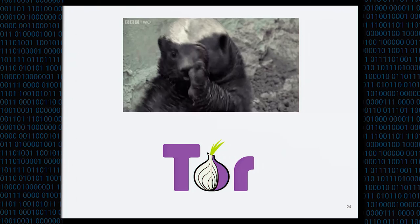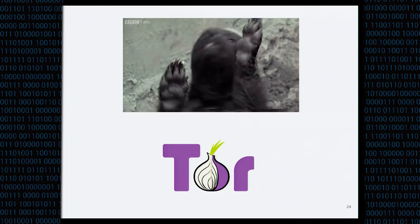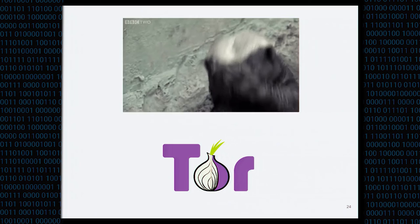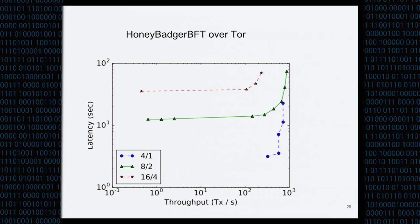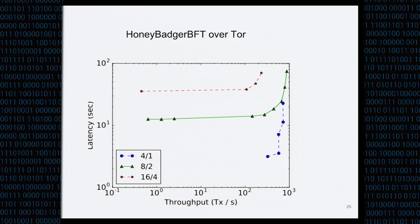We also ran what I believe is the first BFT protocol experiment over Tor. We were able to do this precisely because Tor introduces highly variable latency — the exact challenge asynchronous protocols are designed to handle. We used the exact same protocol configuration as our EC2 experiments with no parameters to tune. We set up nodes making hidden service connections through the Tor network, resulting in N-squared hidden service circuits. With a smaller number of nodes, latency and achievable throughput are much worse over Tor, but we still achieved over 1,000 transactions per second — an unprecedented result demonstrating the protocol's robustness to variable network conditions.